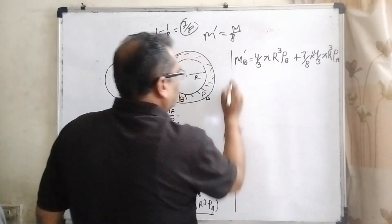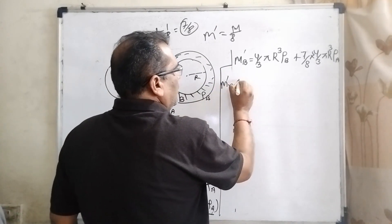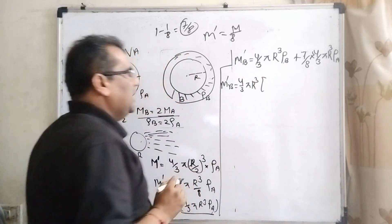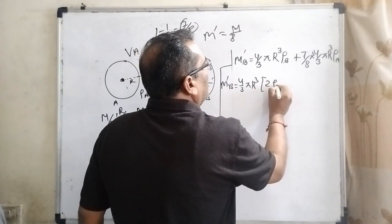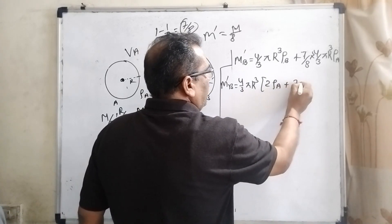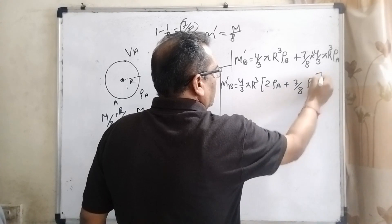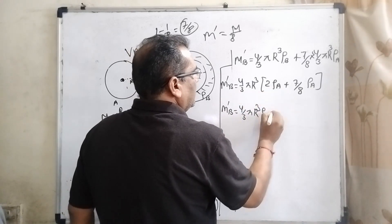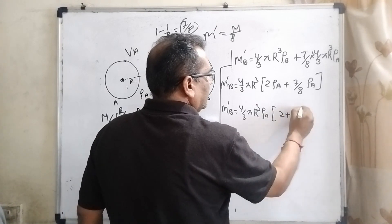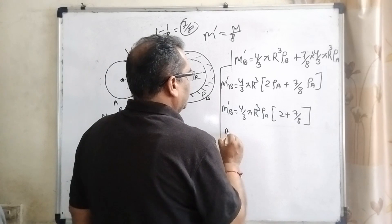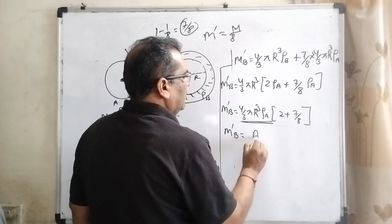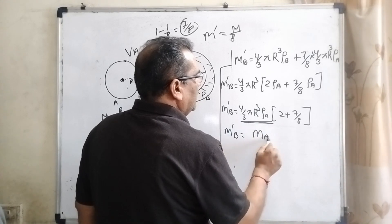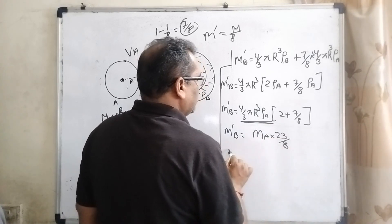You can see M'B, 4/3 π R³ gets common. ρB, what is the relation? It is twice of ρA plus 7/8 of ρA. Therefore M'B equals 4/3 π R³, ρA gets common, then 2 plus 7/8 equals 23/8. So M'B equals 23/8 of Ma. This is the total new mass.